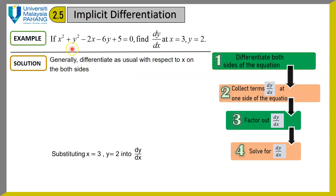Let's look at another example. You have the given equation and are asked to use implicit differentiation to find dy/dx. But this time, you are given values: x equals 3 and y equals 2. That means the final answer must be a numerical value.